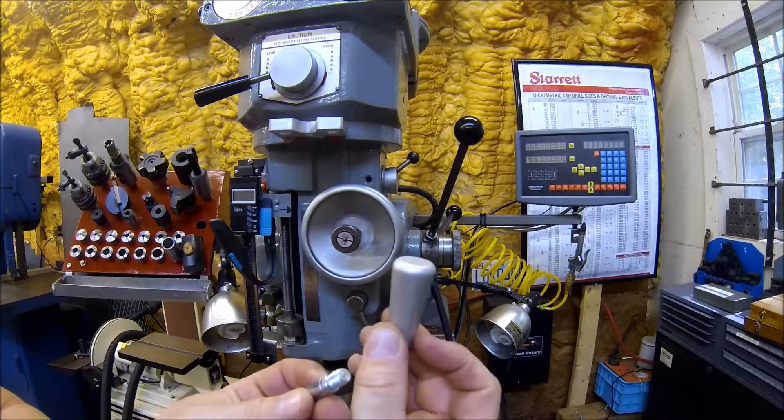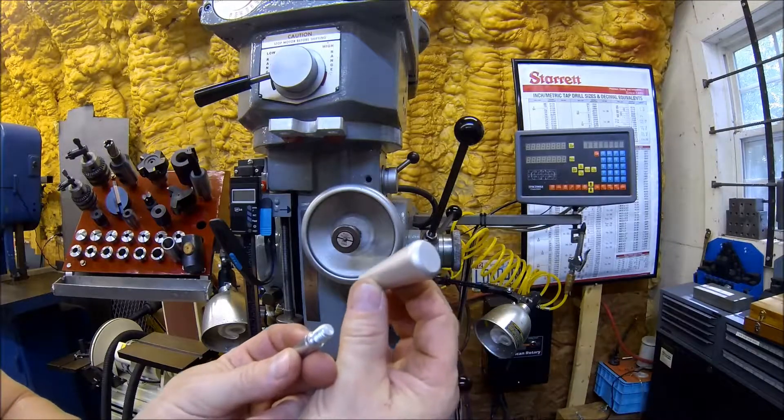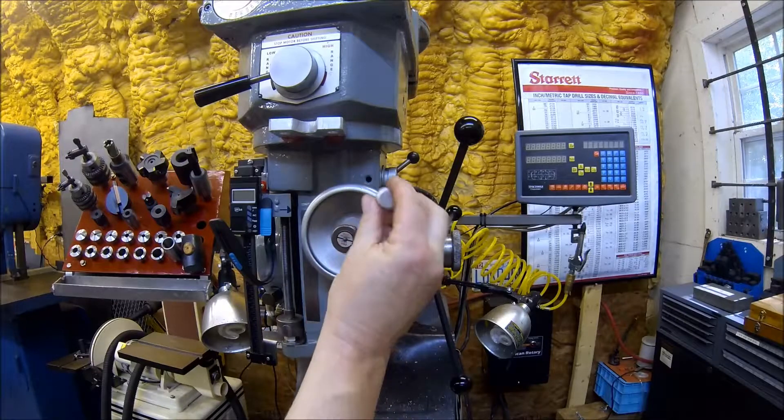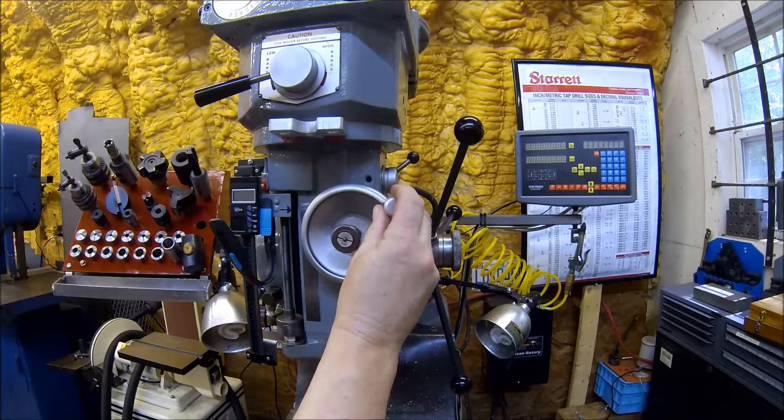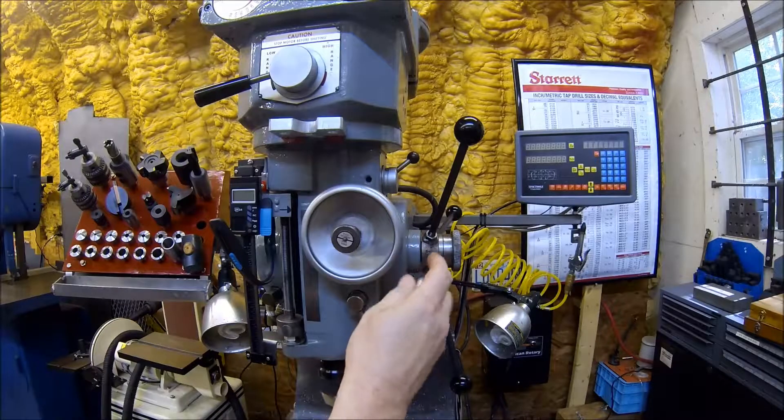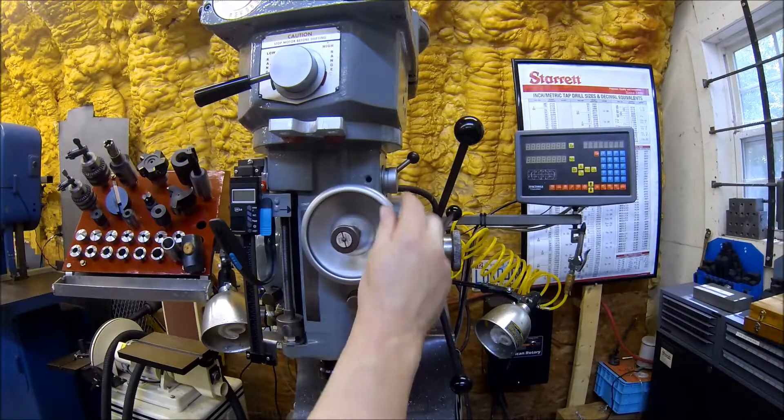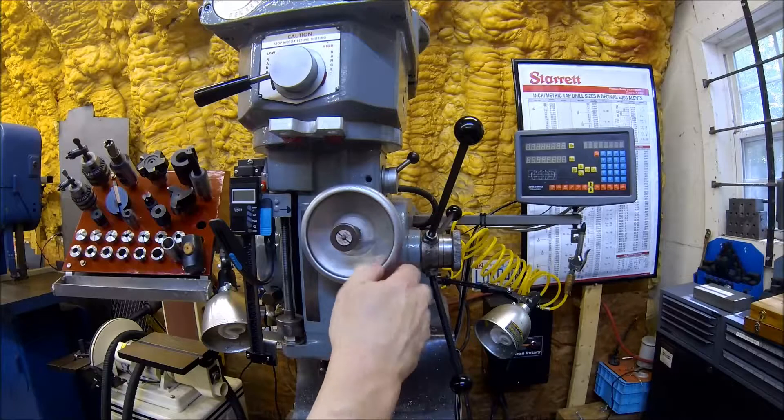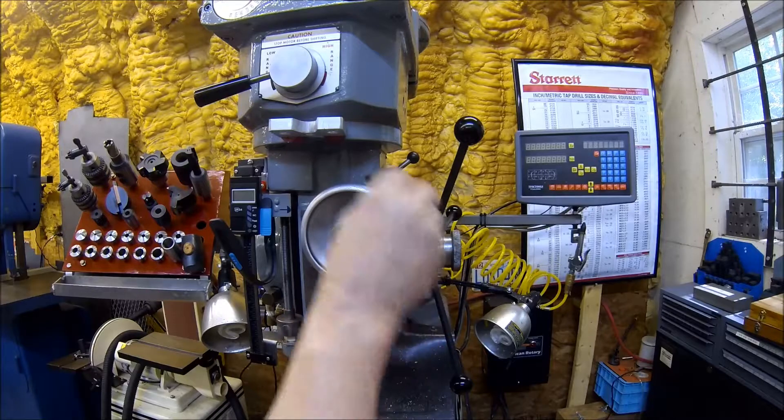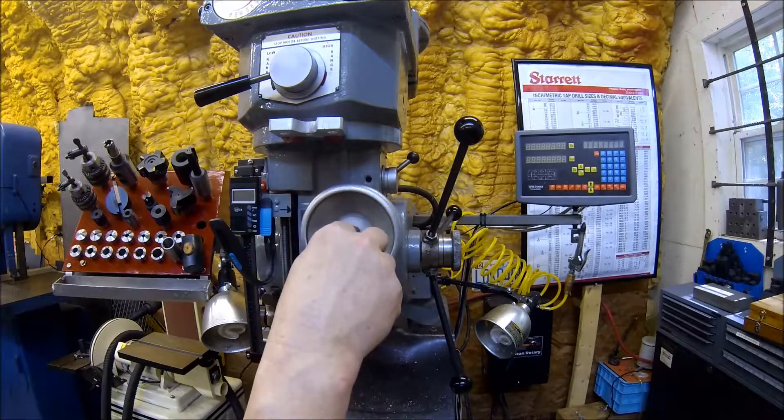Hopefully you can see it right here. What I'd like to do is put this on the feed. That way, instead of having to do it this way, I can just take it and spin it, drop the quill or pull the quill up.